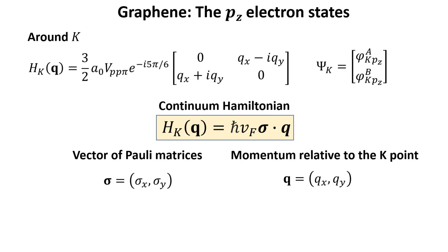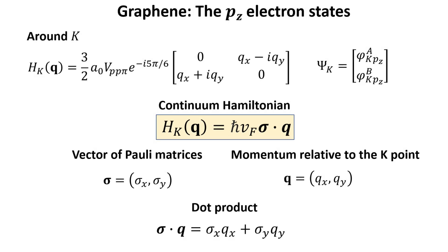The vector of Pauli matrices was introduced here to compactify the Hamiltonian. Each component of this vector is a Pauli matrix as shown. The dot product is to be understood as follows, which will render the two by two matrix Hamiltonian shown initially.